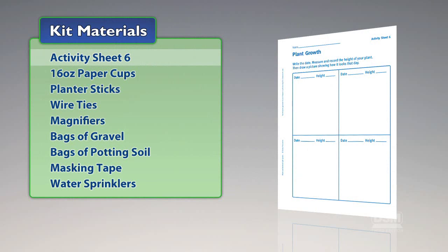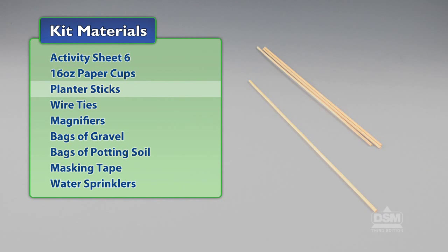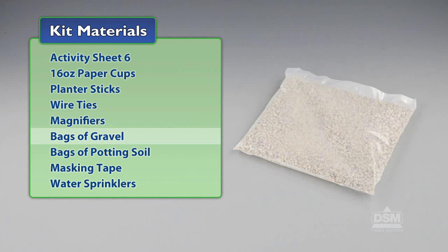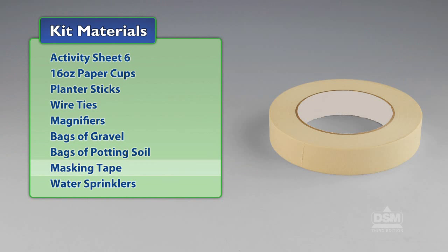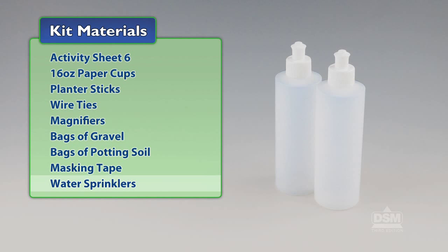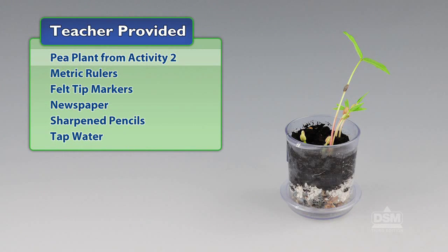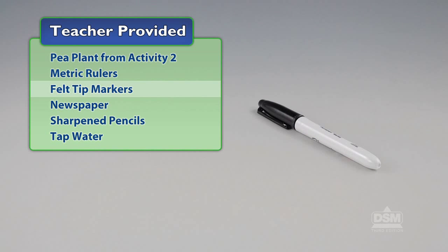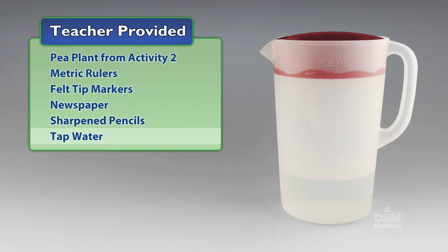You will need the following materials from the kit: Activity Sheet 6, 16-ounce paper cups, planter sticks, wire ties, magnifiers, bags of gravel, bags of potting soil, masking tape, and water sprinklers. You will also need to provide pea plants from Activity 2, metric rulers, felt tip markers, newspaper, sharpened pencils, and tap water.